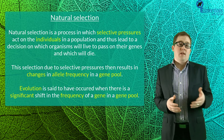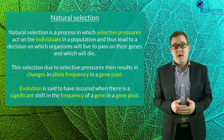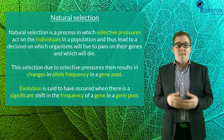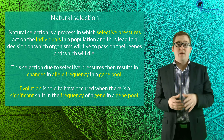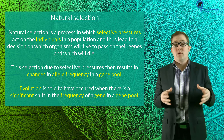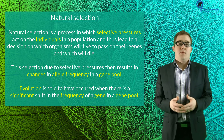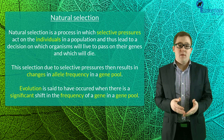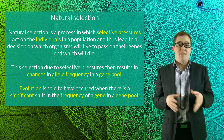In other words, natural selection is a process in which selective pressures — like, for example, competition for mates — act on individuals in a population, and thus lead to the decision on which organisms will live and pass on their genes and which ones will die. This selection due to selective pressures then results in changes in allele frequency in a gene pool, as certain alleles are favoured and others are not.